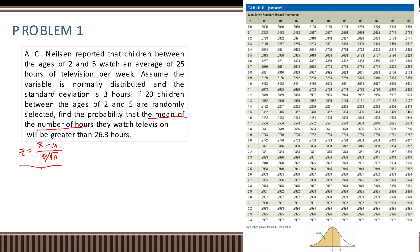Now let us write the given. The population mean mu is 25 hours per week. The standard deviation is 3 hours. The sample size n is equal to 20.